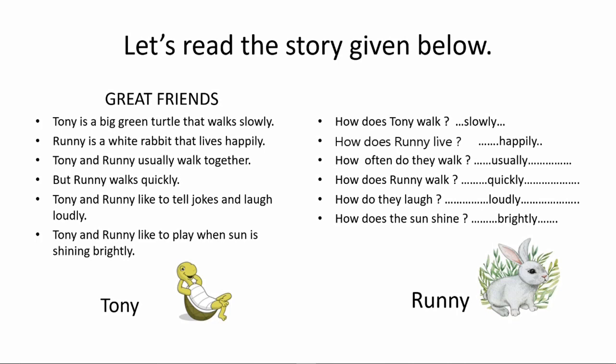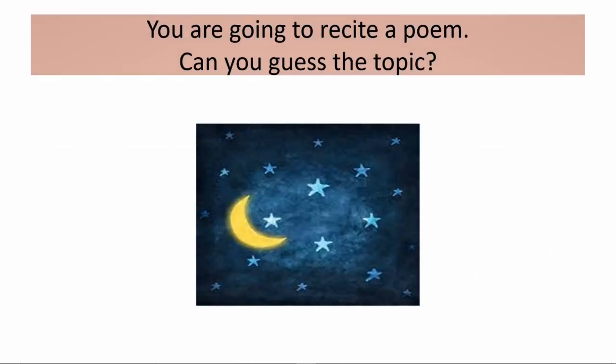Now let's see the answers. How does Tony walk? Slowly. How does Rani live? Happily. How often do they walk? Usually. How does Rani walk? Quickly. How do they laugh? Loudly. How does the sun shine? Brightly.